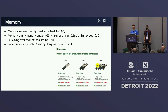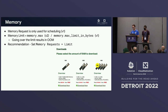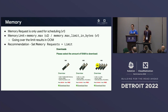Memory is simpler. Memory request is only used for scheduling — we don't set it in cgroups currently, though that will change in V2. For memory limit, we set memory.max in cgroup V2 (memory_limit_in_bytes in V1). If you go over that limit, you get OOM killed. The recommendation is to set memory requests equal to limits. Unlike CPU, memory is not a compressible resource — you can't overcommit on it. Setting them equal prevents impacting other pods and avoids using more resources than requested.